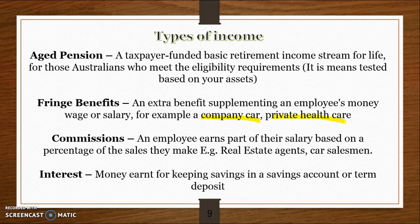Commissions are earned as part of your salary and are based on a percentage of the sales you make. It's a form of income based on your performance — real estate agents get a commission per house they sell, car salespeople get a commission per car they sell, etc. Interest is money earned from keeping savings in a deposit account, savings account, or term deposit — it's a form of income you receive for your savings.